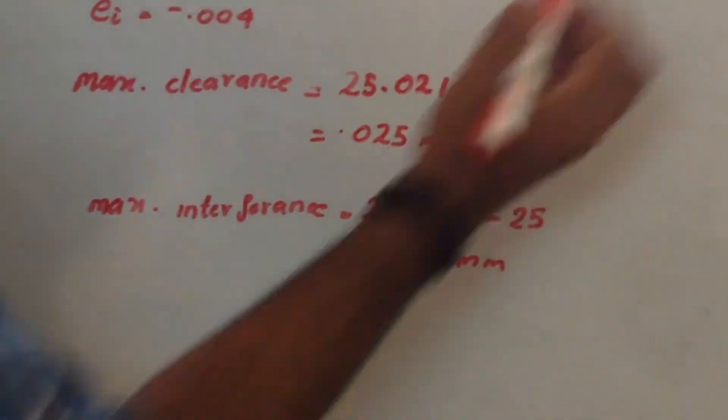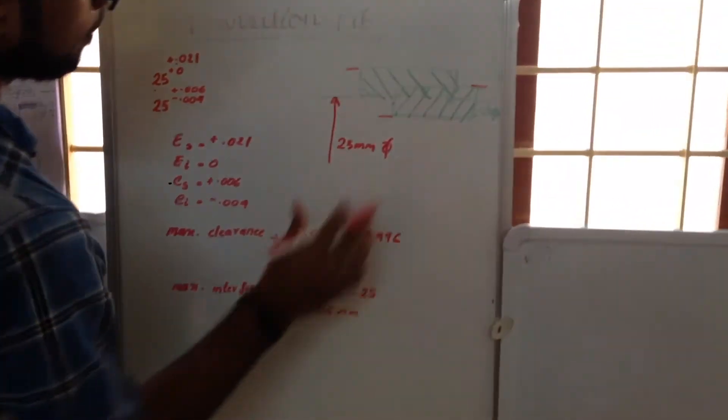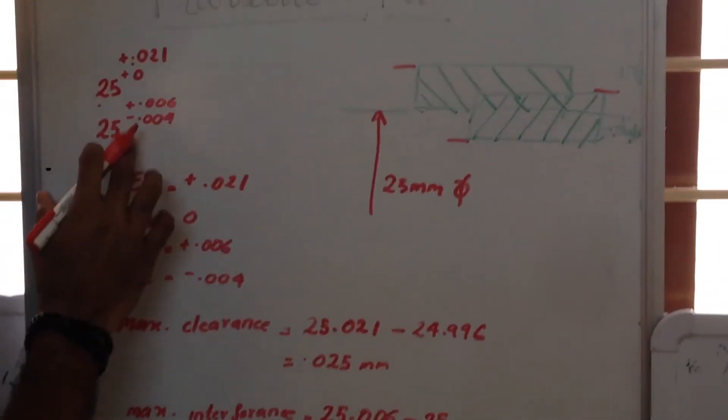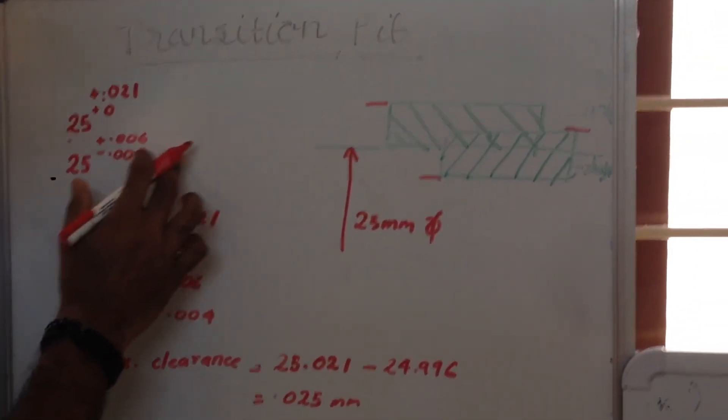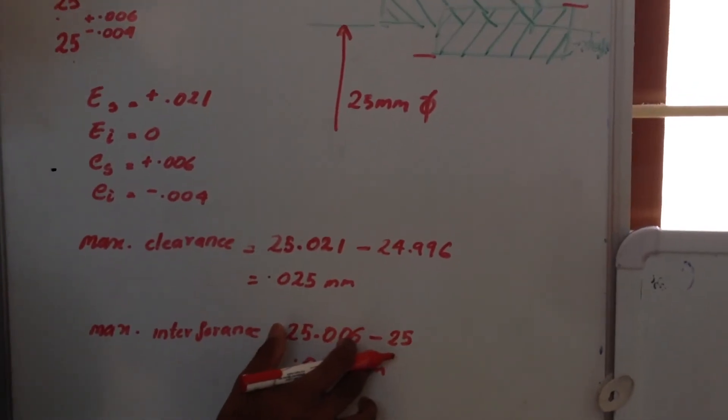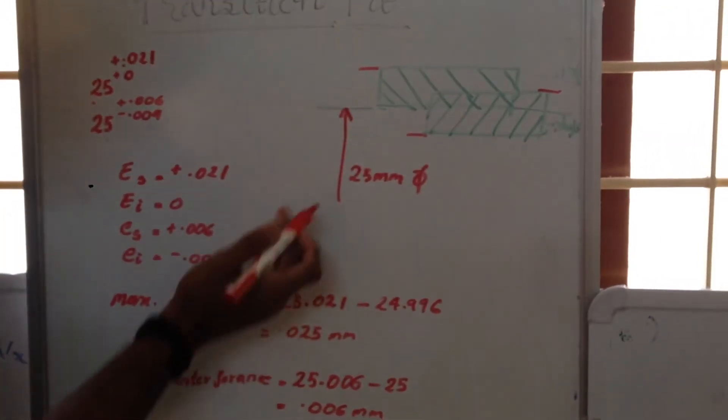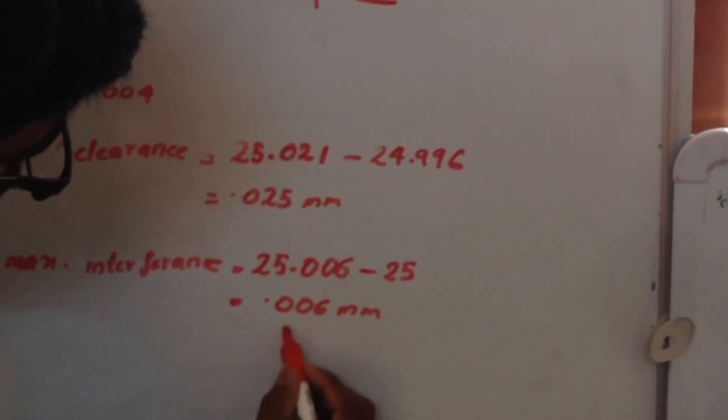And maximum interference is equal to this value, that's the max maximum size of shaft, that's 25 plus 0.006, which is 25.006 mm, minus that's the minimum size of hole, that's 25 mm itself, is equal to 0.006 mm.